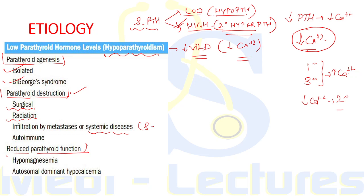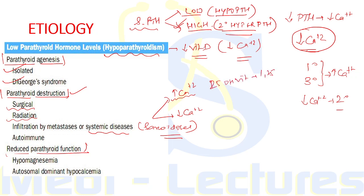It is very important to note that sarcoidosis can lead to both hypercalcemia and hypocalcemia. Hypercalcemia occurs due to increased conversion of 25-hydroxyvitamin D to 1,25-dihydroxyvitamin D, which is the active form. Hypocalcemia occurs due to infiltration and destruction of the parathyroid glands. Destruction can also occur due to autoimmune endocrinopathies like MEN syndrome.